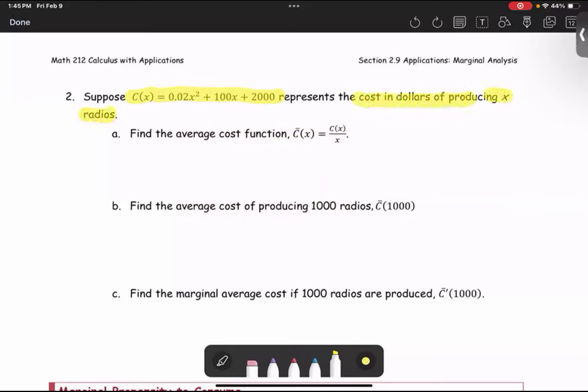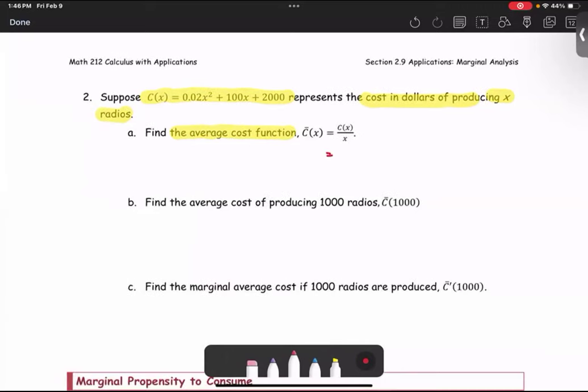Part A, we're going to find the average cost function. The notation is C̄(x) equals the total cost C(x) all divided by x. Just to set it up, since the cost is 0.02x² + 100x + 2000, we divide this total cost by x, which means we divide each term of the numerator by x.